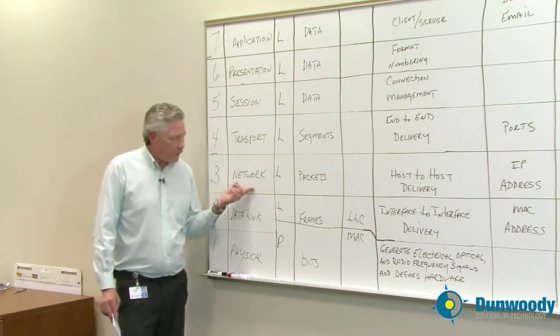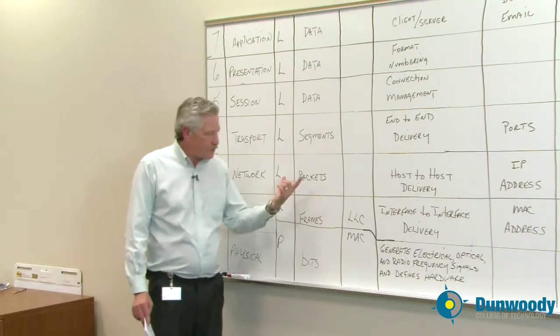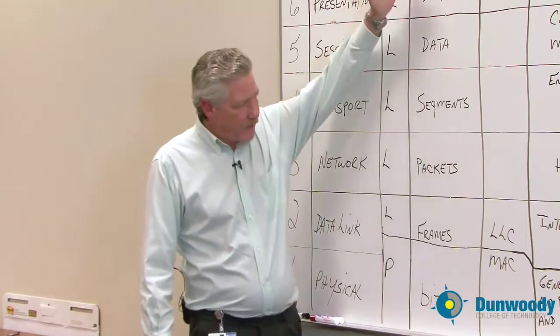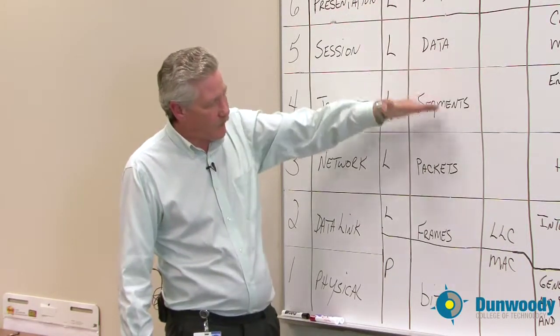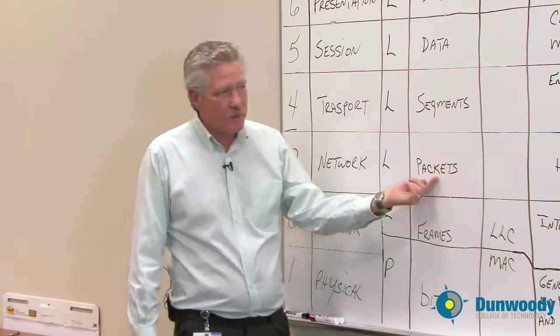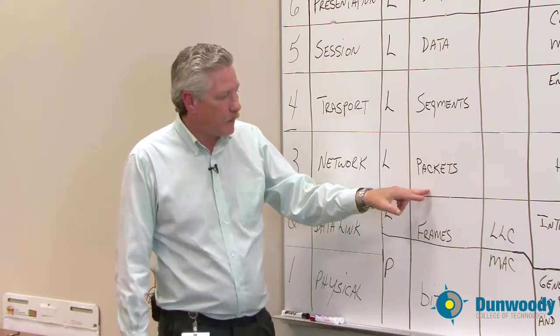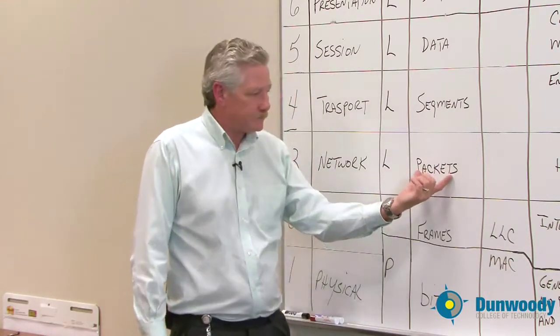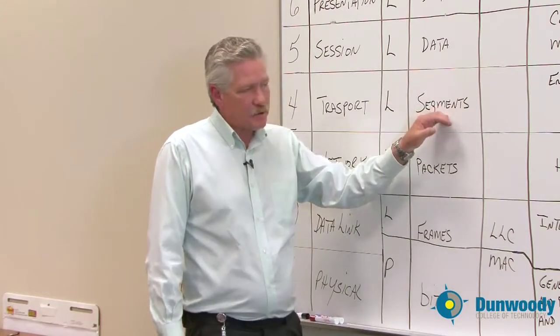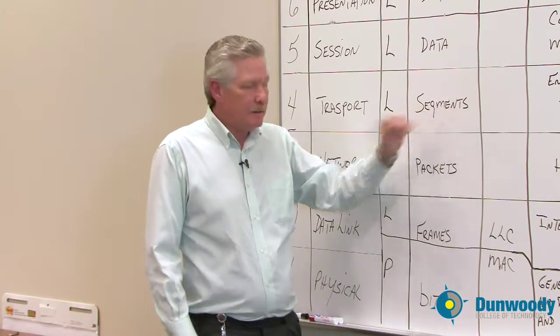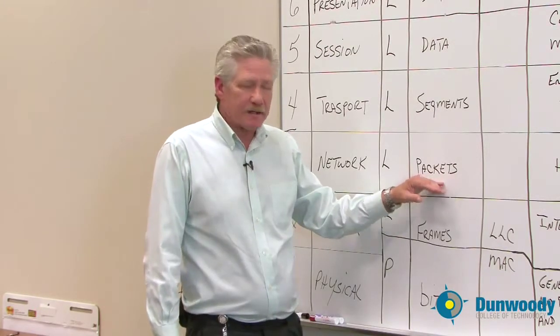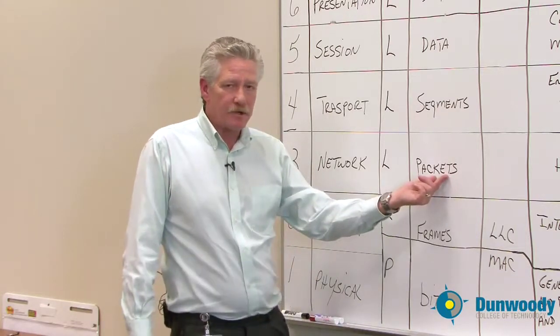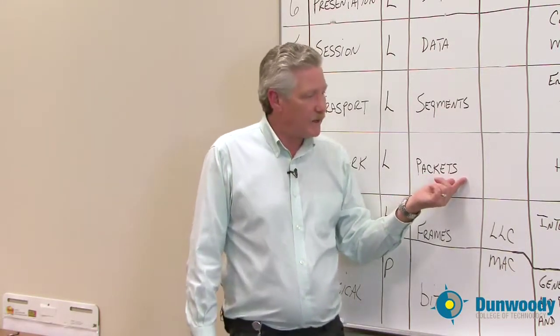So at the network layer it's a logical layer and this is where packetization happens. As the data comes down through the different layers, at this layer it's putting on an IP header. It's also putting them into a nice size packet. At the transport layer we actually segment the data. Here we just put a nice header on it. It's actually a 192 bit header that has destination and source addressing and a whole bunch of other great stuff.